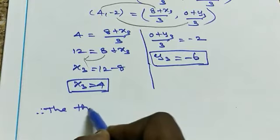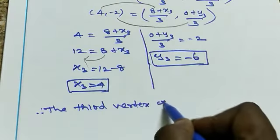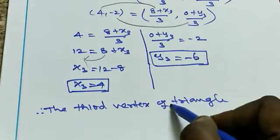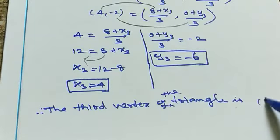The third vertex of the triangle is (4, -6).